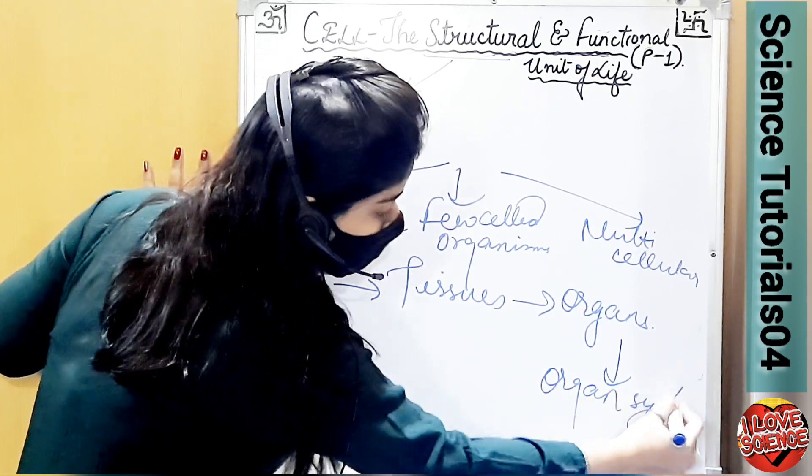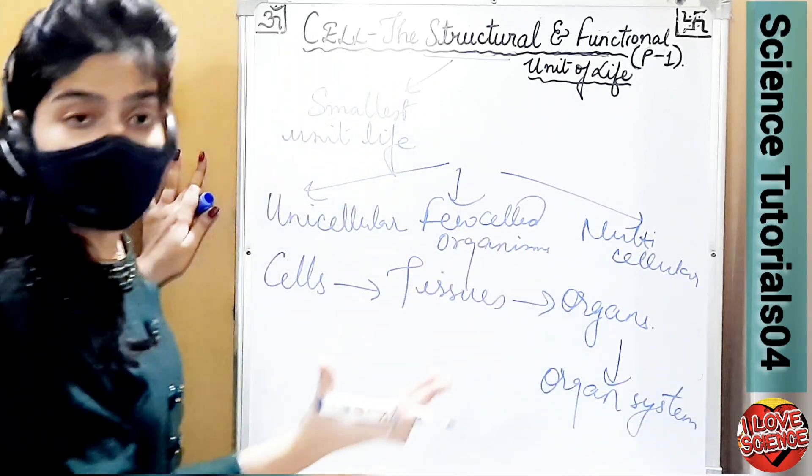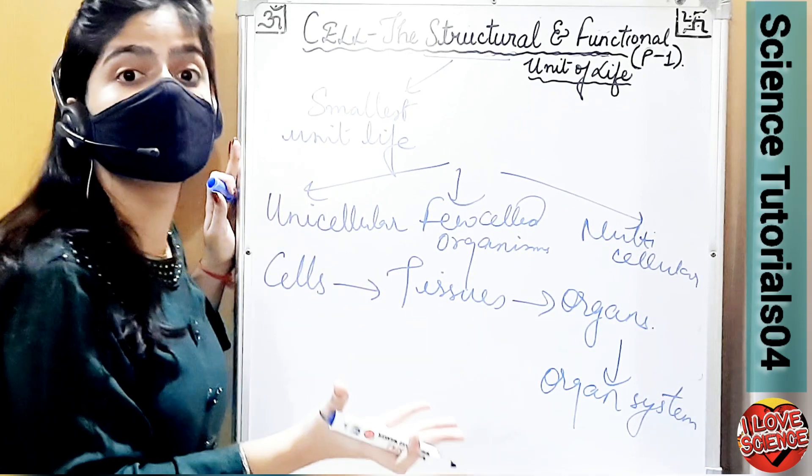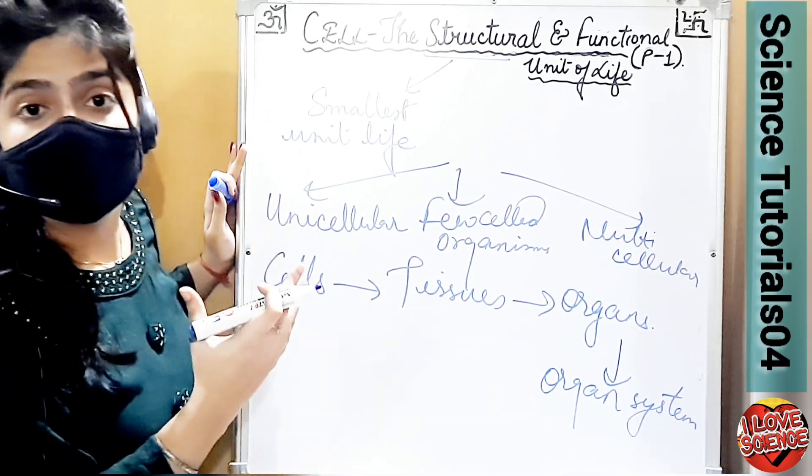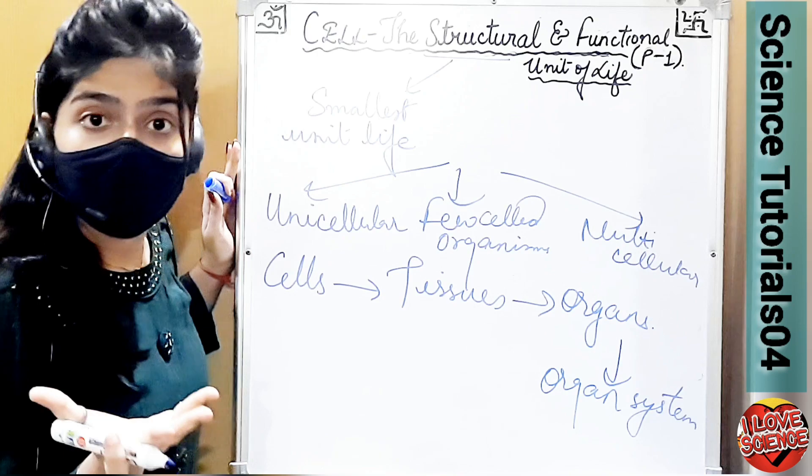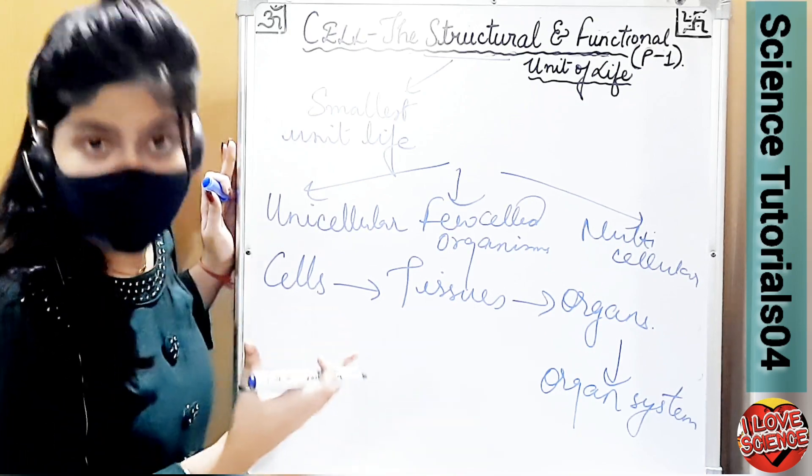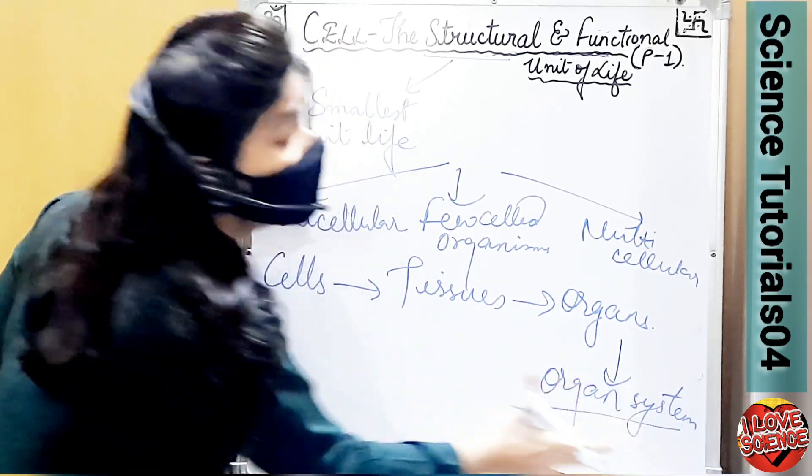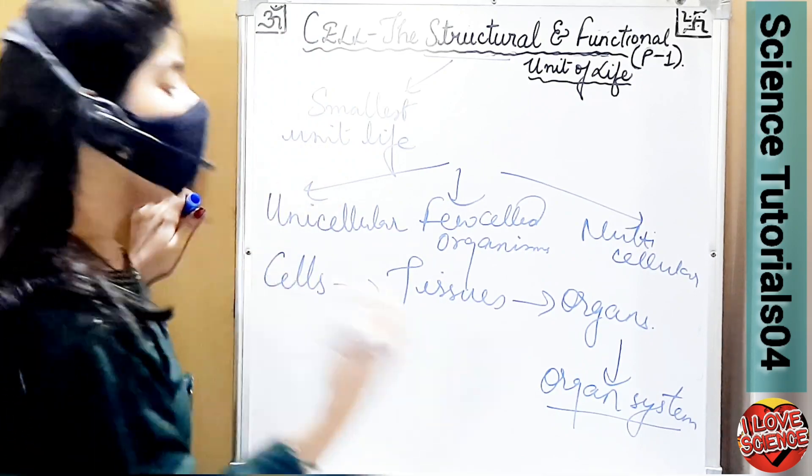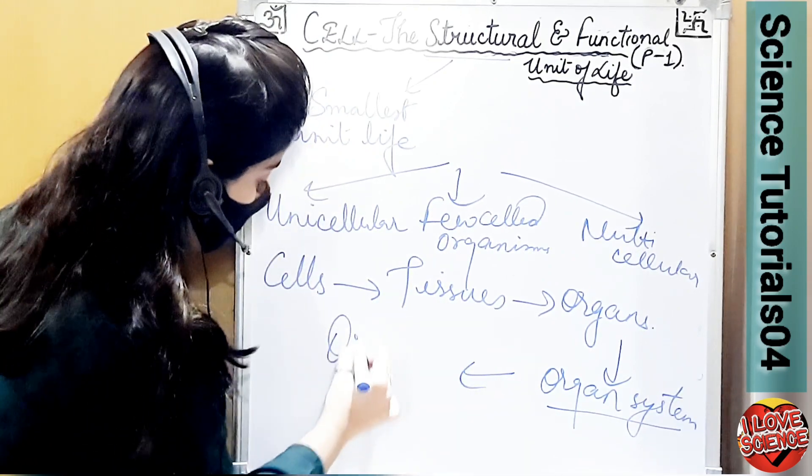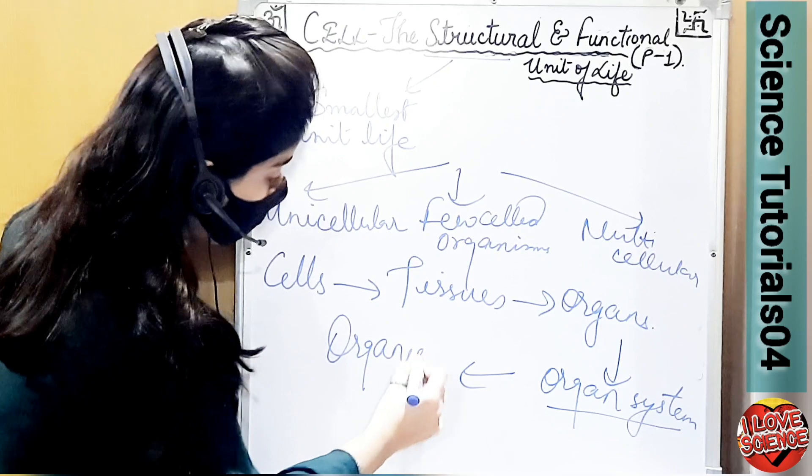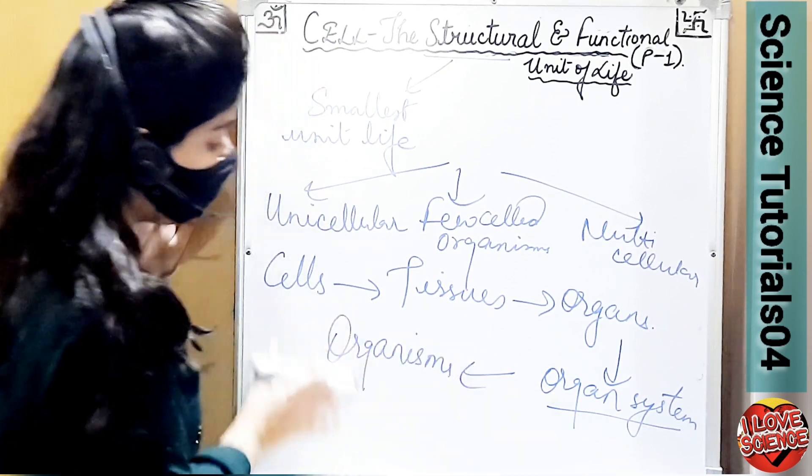Organ systems, like heart for circulatory system, kidney for excretory system, lung for respiratory system. And many organ systems combine to form the complete organism. Organ systems form the organisms.